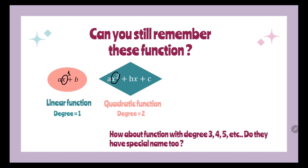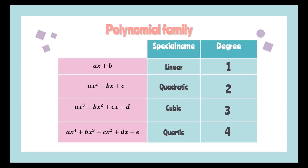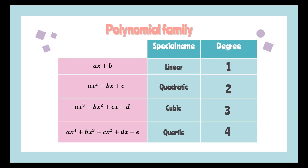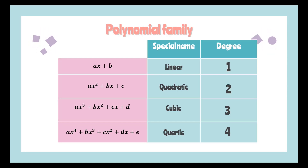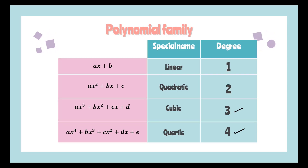How about functions with degree 3, 4 and 5? Do they have special names too? Yes. Cubic is the name of the polynomial of power 3, and quartic is the name of the polynomial of power 4. The degree of a cubic function is 3 and the degree of a quartic function is 4.